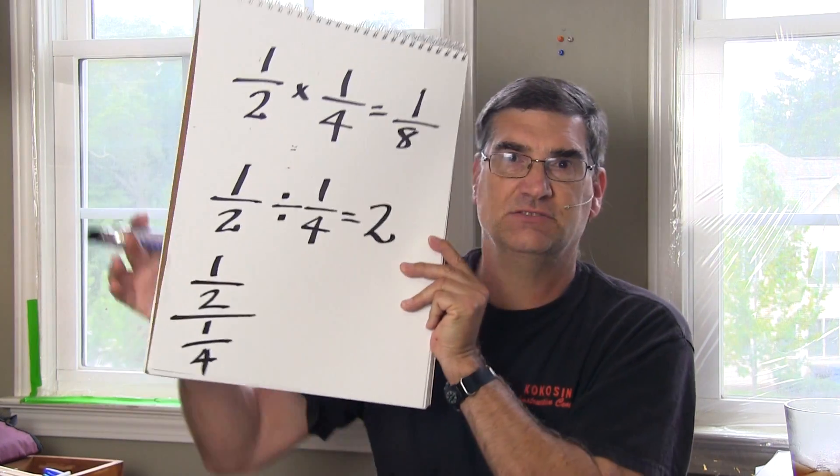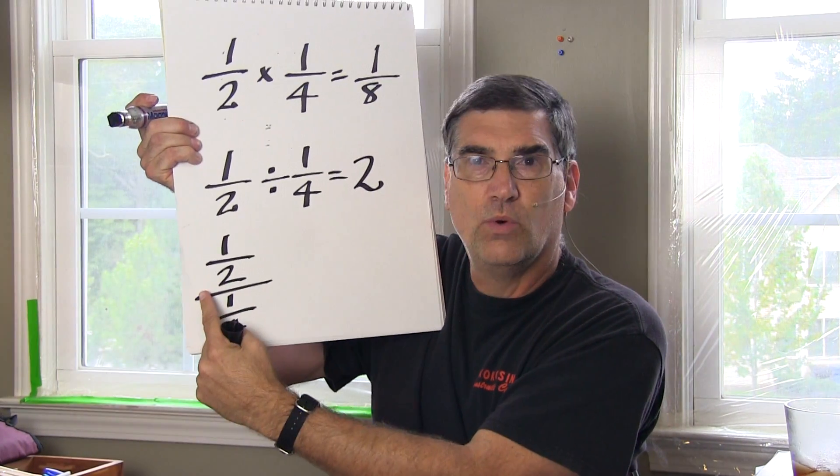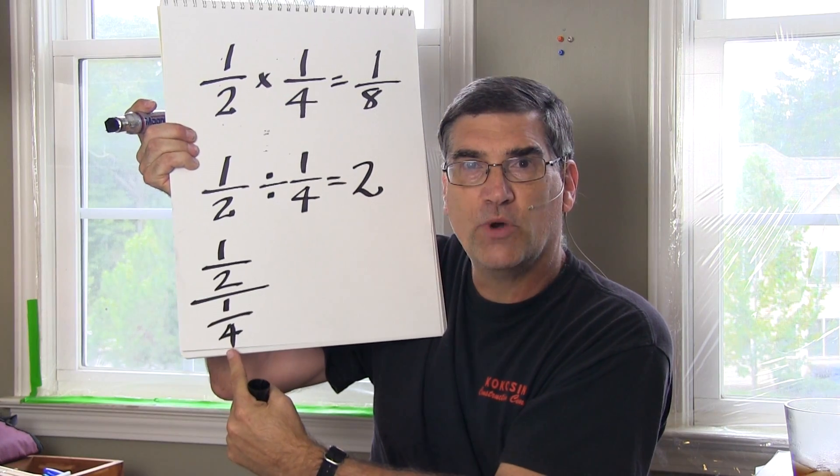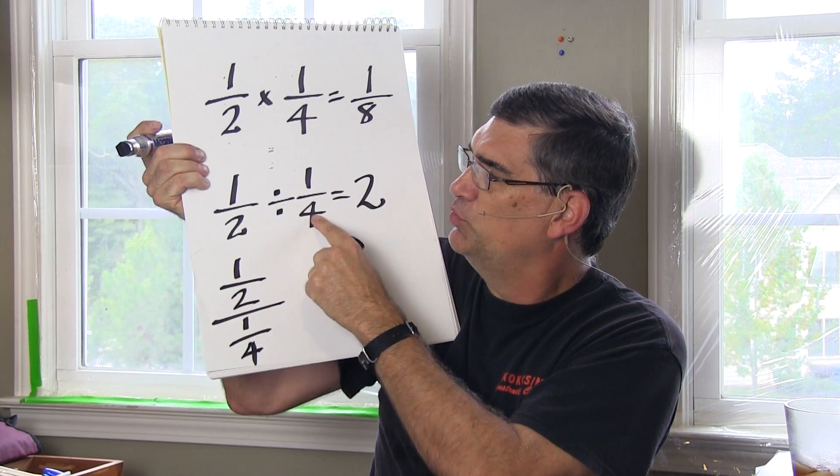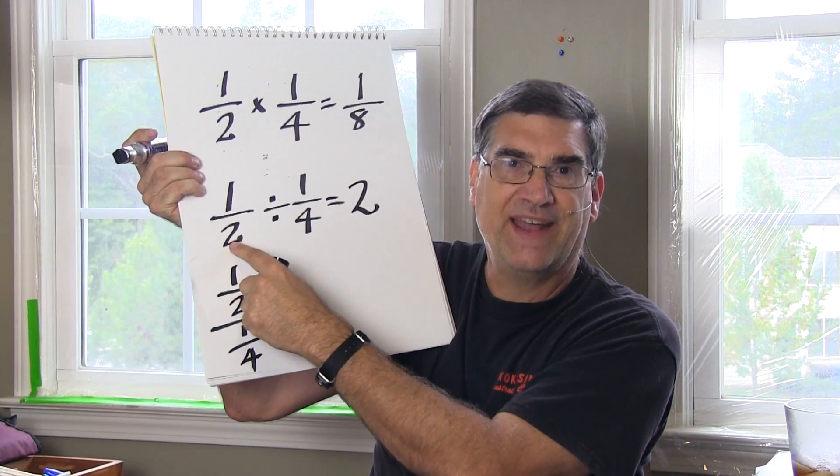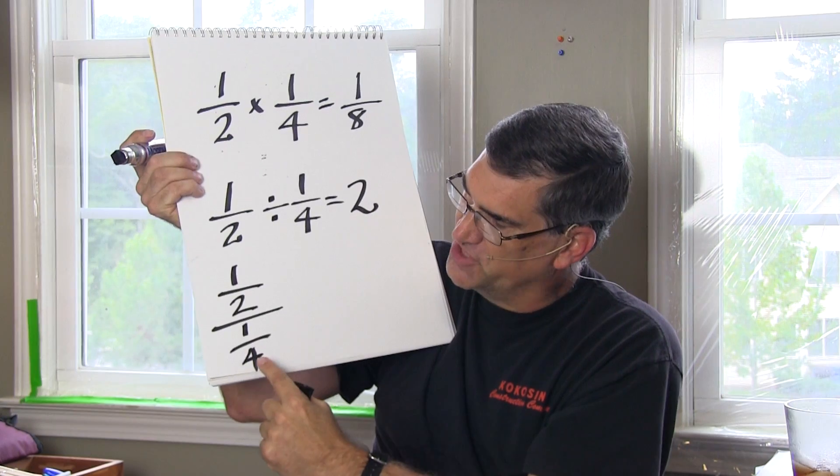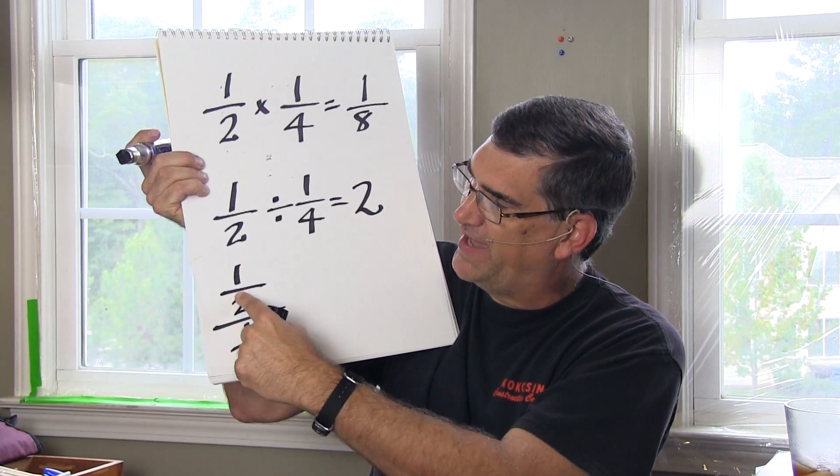So the answer is two because if you write it as a fraction, it's one half over one quarter. Well, one half divided by one quarter is two because two one quarters fit into one half. So this question is asking, how many quarters fit into a half?